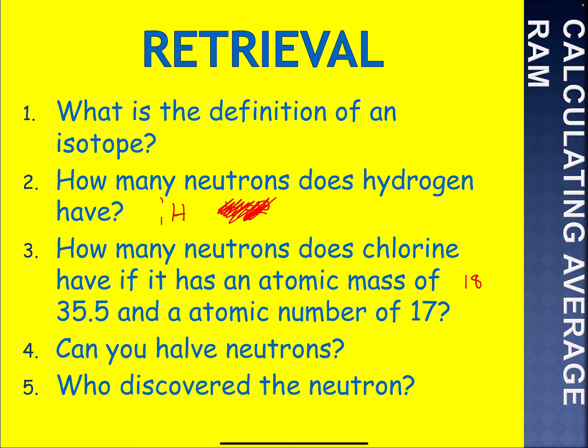Okay, number one: what is the definition of an isotope? Something like atoms of the same element with a different atomic mass, or you could have said atoms of the same element with different number of neutrons.